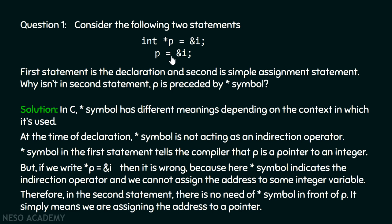When we write `p = &i`, we are simply putting the address of variable i inside this pointer. If we write a star in front of it, it means we are trying to access the location pointed by the pointer and put the address of variable i to that location, which is not possible. Therefore, there is no need to put a star here.